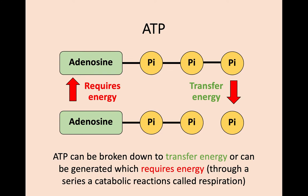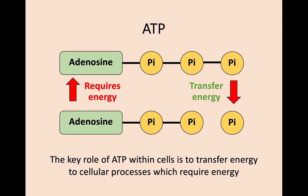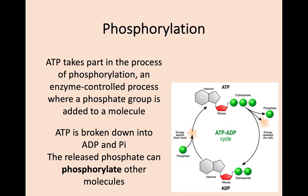Similar to catabolic and anabolic reactions from the first key area, ATP and ADP go around in a cycle. Breaking down ATP into ADP plus phosphate releases or transfers energy, but building ADP and phosphate back up into ATP requires energy. The key role of ATP within cells is to transfer energy to cellular processes that require it. The process of adding a phosphate onto a molecule is known as phosphorylation — this is an enzyme-controlled process, and that released phosphate from ATP breakdown can go on to phosphorylate other molecules.